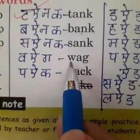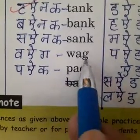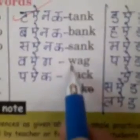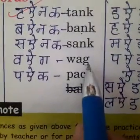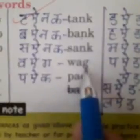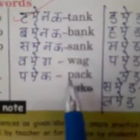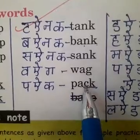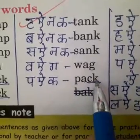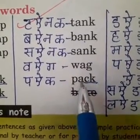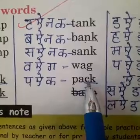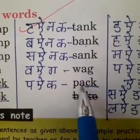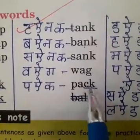R, A, G — Rag. Rag. R, A, G — Rag. P, A, K — C says K, K says K. P, A, K — Pack. P, A, K — Pack.